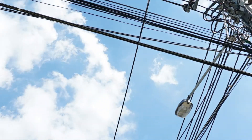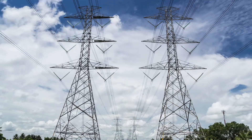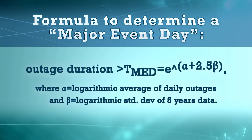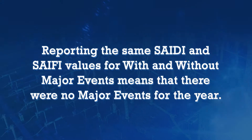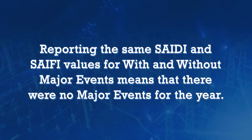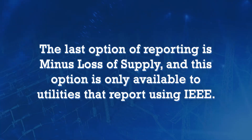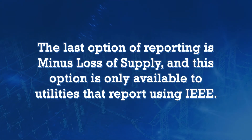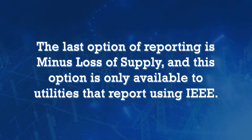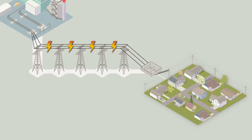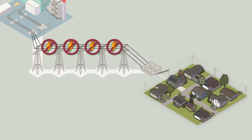Without major events allows utilities to remove some of the outages to give a better picture of normal operations. Any utility using IEEE standards uses a complicated formula to determine whether or not it was a major event day. Reporting the same SAIDI and SAIFI values for with and without major events means that there were no major events for the year. The last option, minus loss of supply, is only available to utilities that report using IEEE, and filters out outage events caused by high voltage transmission lines not being able to supply power. If there are power outages due to loss of supply, this metric will be different than SAIDI and SAIFI with major event days.